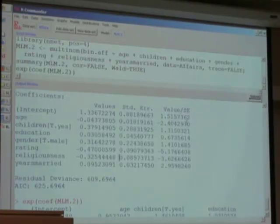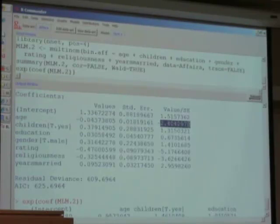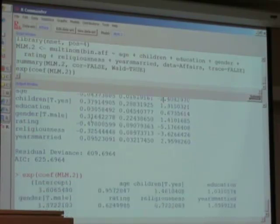First of all, age is statistically significant. If you look at the t-stat, which is the value of a standard error, you would see that the increase in age is correlated negatively. So the odds of having an affair declined with age.